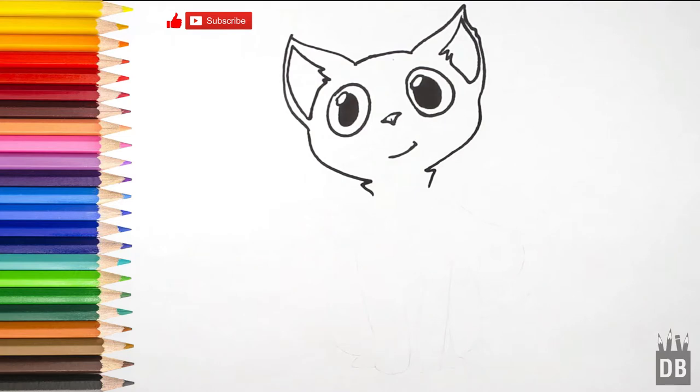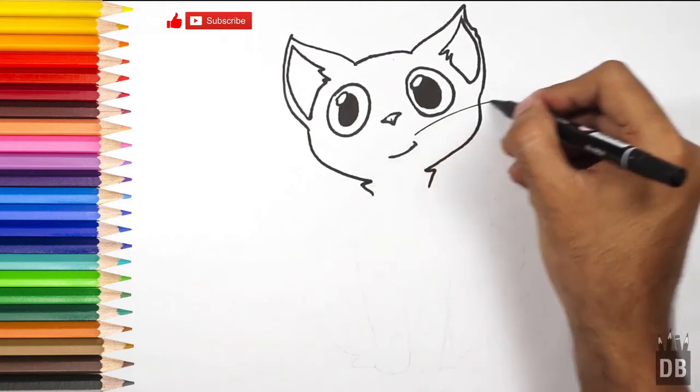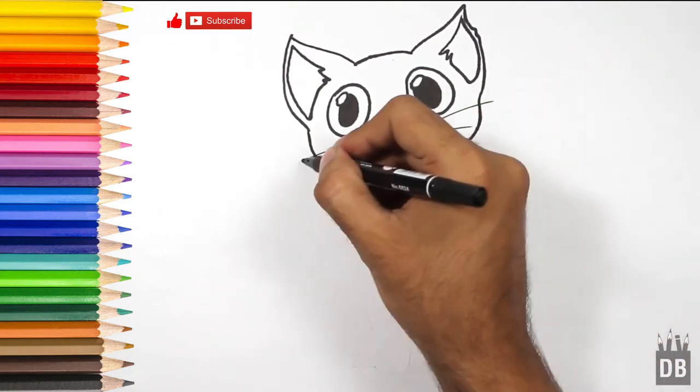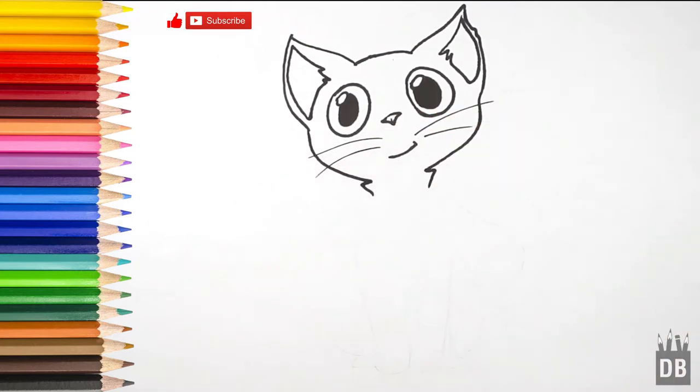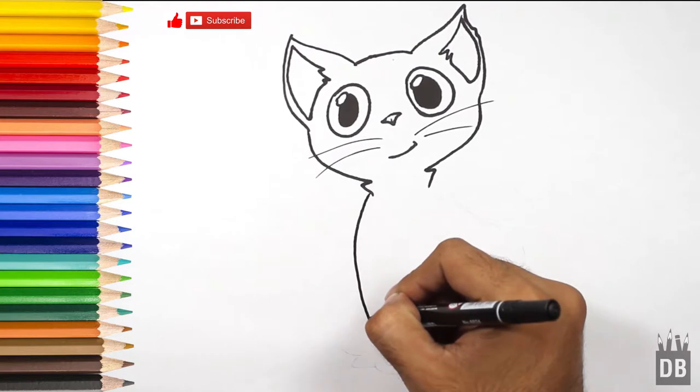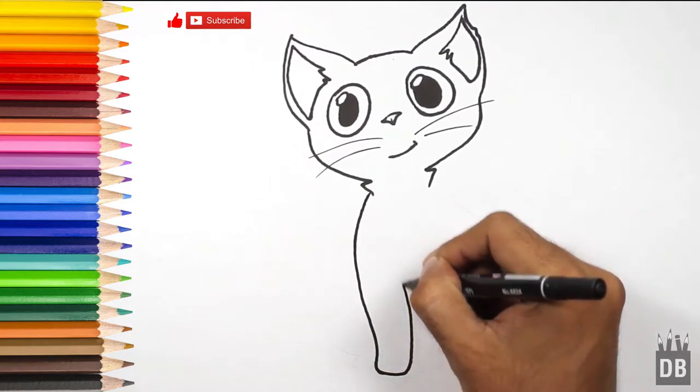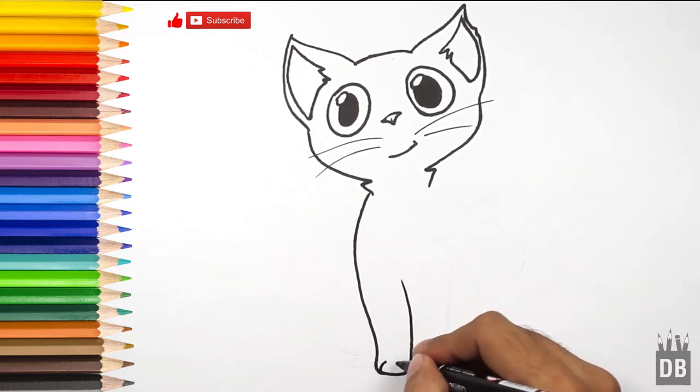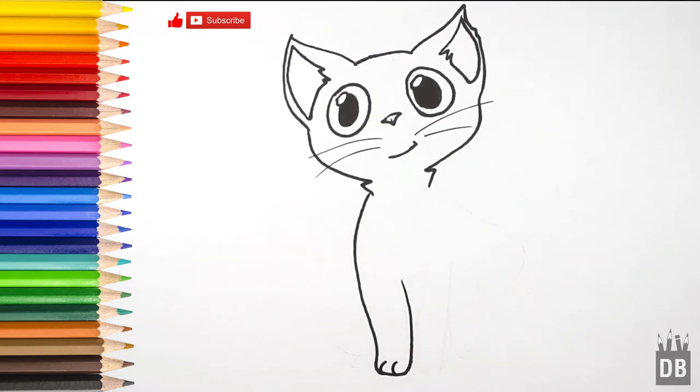It should look so cute. For the body, make a line like this, and this also is for half of a paw, make two lines like this.